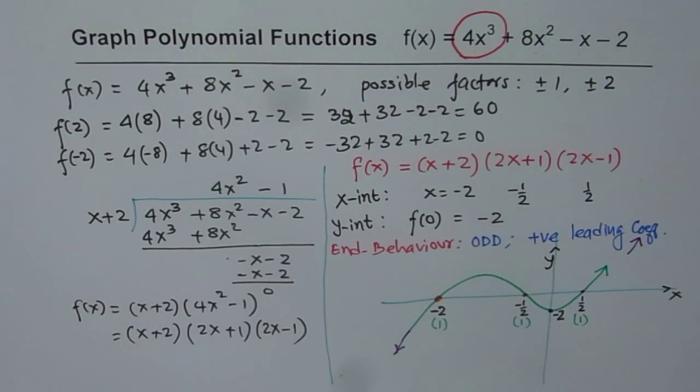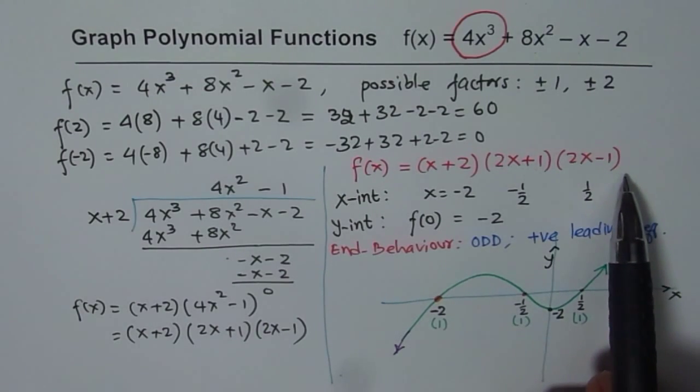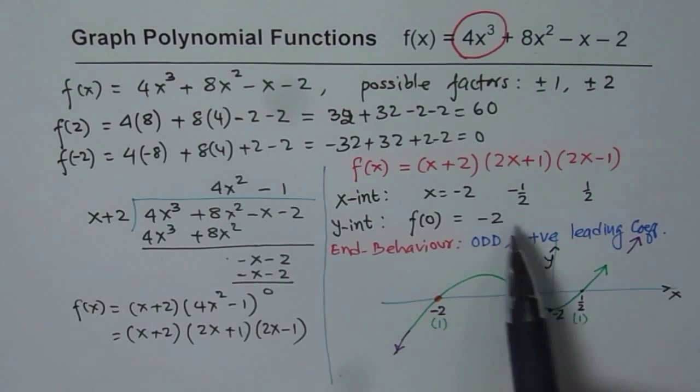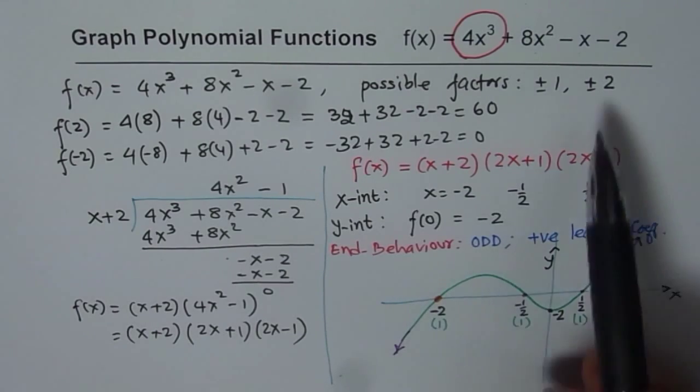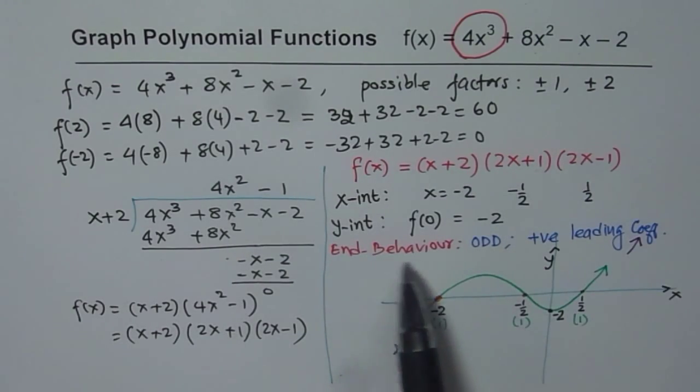I hope with this, you understand exactly how you can sketch a polynomial function when given in standard form. It is kind of easy when you already have it in factored form. So first step is factoring. Adopt all the skills you have learned. Factor the function. Once you have factored, identify the intercepts, both x- and y-intercepts. From the function, identify end behavior.